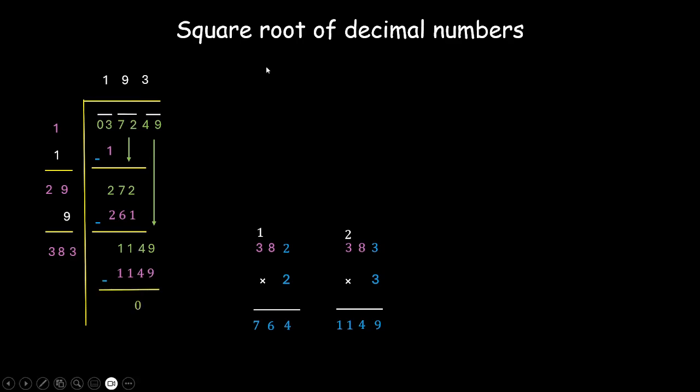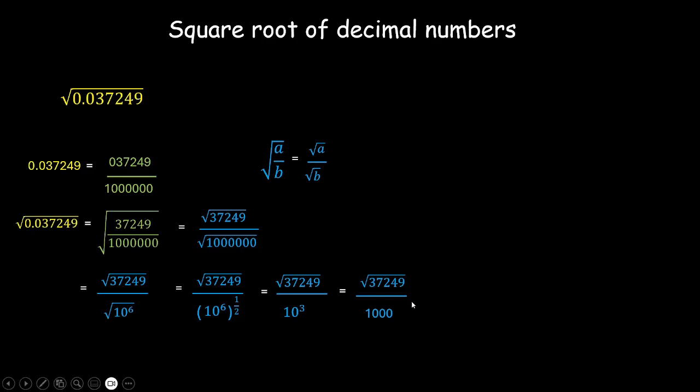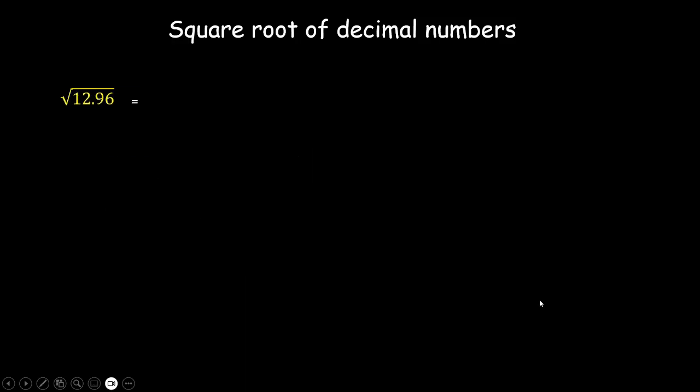And a 0. No more pair left. So we are done with our long division. The square root of 37249 is 193. So we have 193 divided by 1000 which is 0.193. So the square root of 0.037249 is 0.193. Alright.